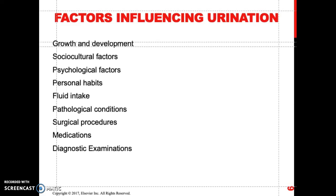There are numerous factors that influence urination. Growth and development is one — the urinary system is not fully developed in infants or toddlers, and potty training begins around two to three years of age. Sociocultural factors also influence urination. Some patients don't like to use public bathrooms and will wait until they get home, which causes urinary stasis that can predispose them to urinary tract infection.